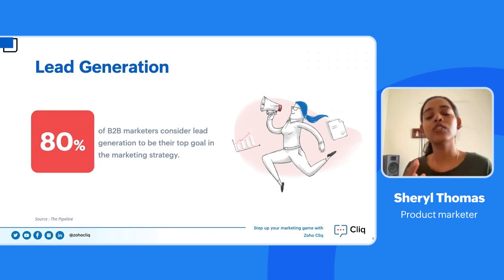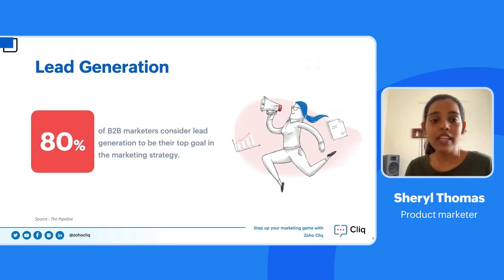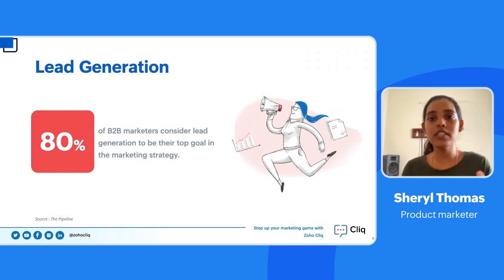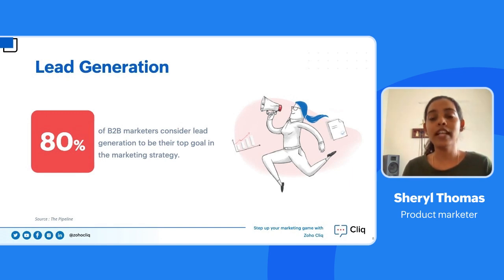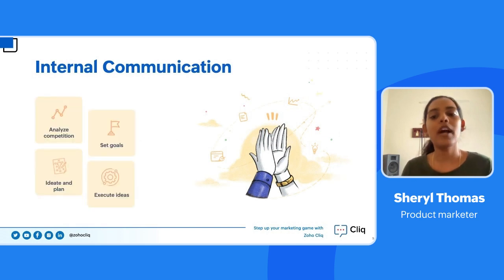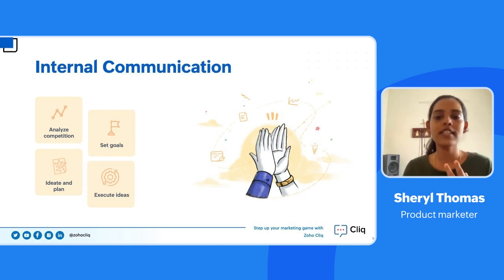80% of B2B marketers say the top goal in marketing is lead generation. As a product marketer myself, I would definitely agree that lead generation is one of my top goals — that is what makes marketers count. Communication can be broadly divided into two categories: internal communication and external communication.